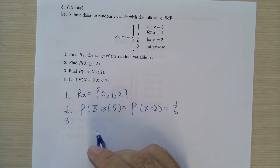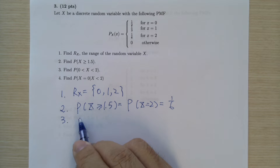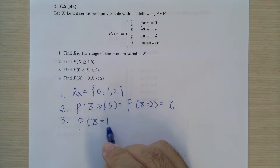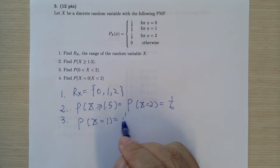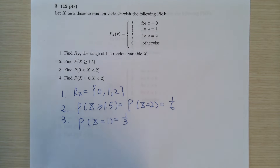Part 3: what is the probability of P(0 < x < 2)? As you can see, this is the probability when x equals 1, which is one third.